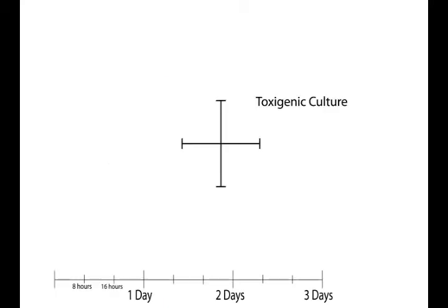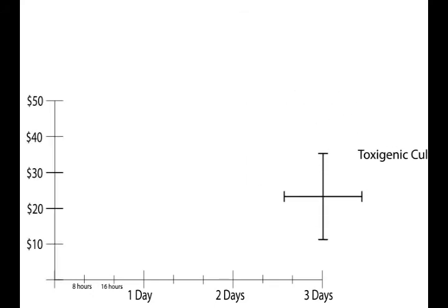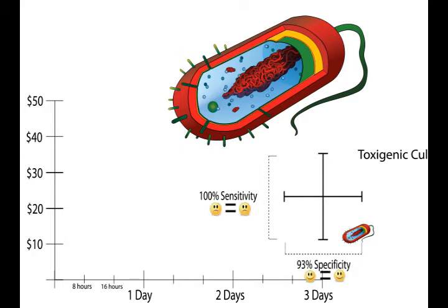A Toxygenic Culture requires three days for a result, costs $22 per test, and detects the presence of the entire cell. This test is accurate to 100% sensitivity and 93% specificity. Sensitivity is the likelihood of a sick patient correctly identified as sick, and specificity is the likelihood of a healthy patient correctly identified as healthy.